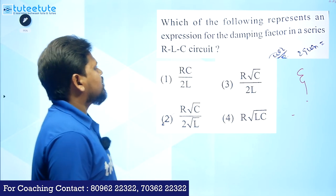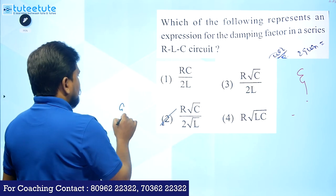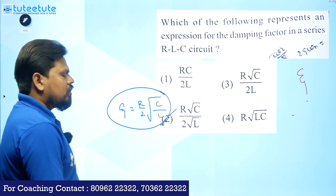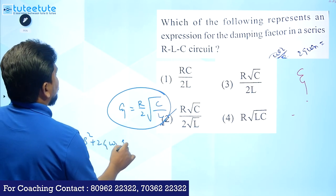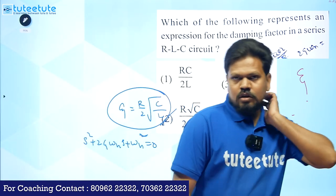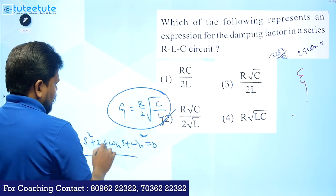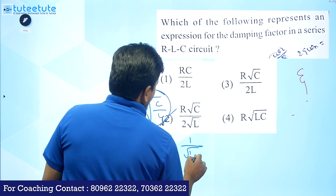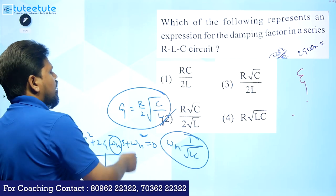Next question: which represents the damping factor ζ for a series RLC circuit? Using the standard form s² + 2ζω_n·s + ω_n² = 0, and ω_n = 1/√(LC) for series RLC, solving gives ζ = R/2 × √(C/L). That is the answer.